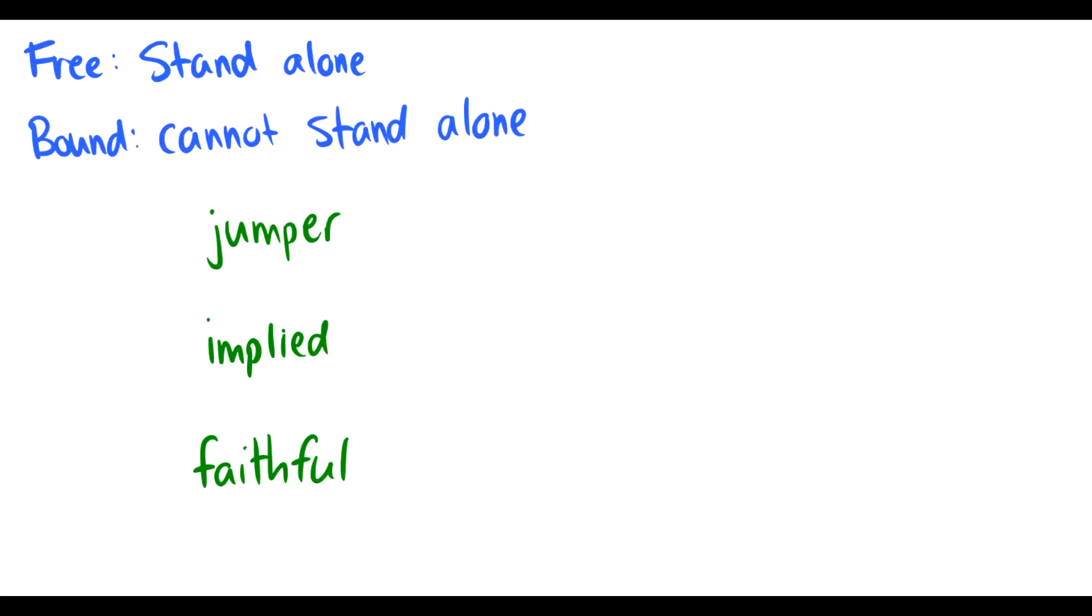So how do we do this? Well first we need to distinguish types of morphemes. So there's free morphemes and there's bound morphemes. So free morphemes are standalone which means they're words. We can use them in a sentence on their own. While bound morphemes we can't.